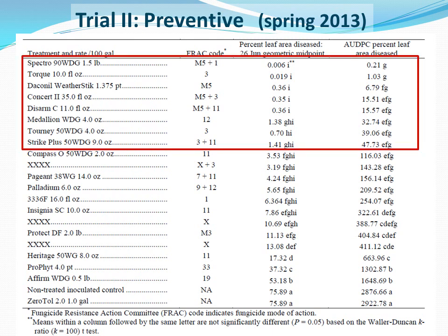The most effective treatments can be seen in the red box at the top. These would include seven of the most effective chemistries from our 2012 trial, as well as the Strike Plus treatment. Unfortunately, the Mancozeb product Protect did not do as well as expected. I was assuming since chlorothalonil did so well and is also a protectant that Mancozeb might do equally as well, but that was not the case. These products contain either the active ingredient chlorothalonil, flutioxanil, or a DMI mode of action as found in Torque, Turney, or Strike Plus.